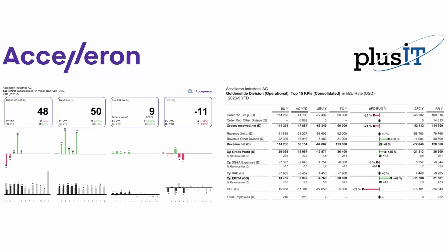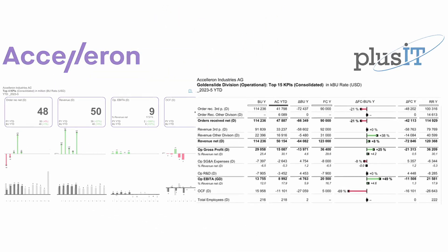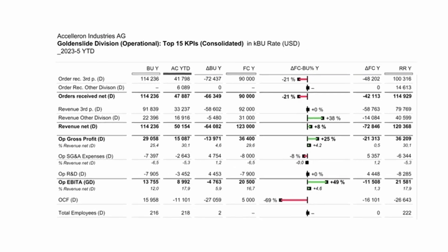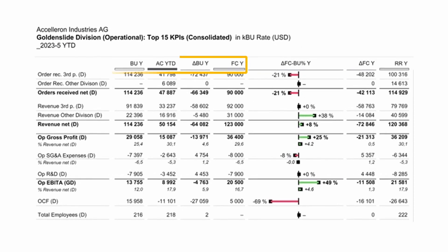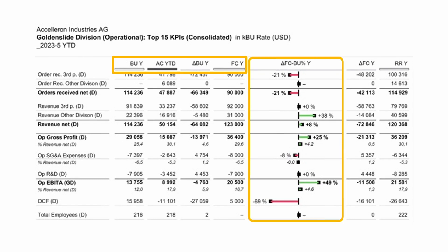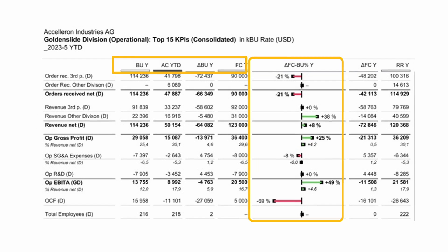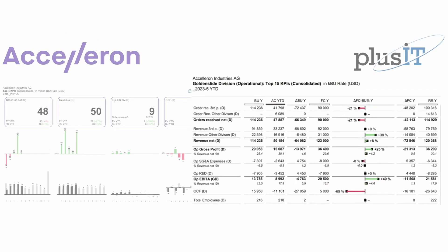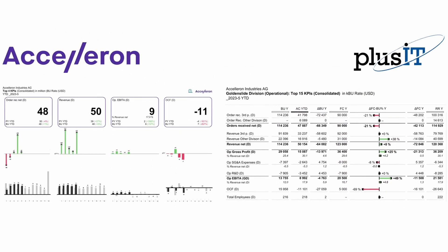On the second page, we have the top 15 KPIs. The table is designed with clear grouping and formatting. Each column has a corresponding decorative line and relative variances are shown as in-cell pin charts — a nicely prepared IBCS-inspired report.